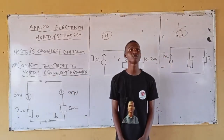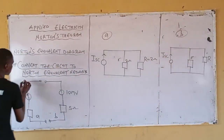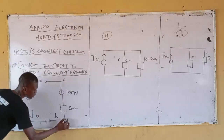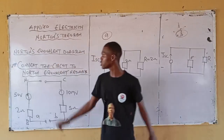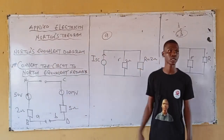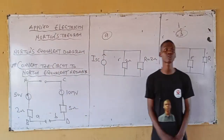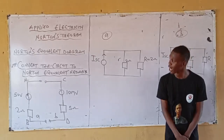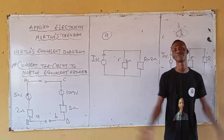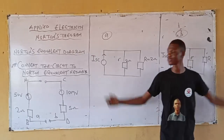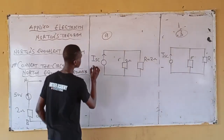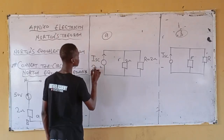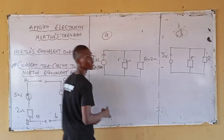What branch contains your load resistor? Let's label them A, B, C, D. The current will be 25A. How do you get 25A? 50 over 2 equals 25A. You have 25A — then you are done.